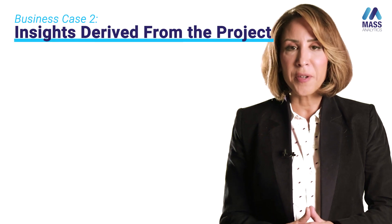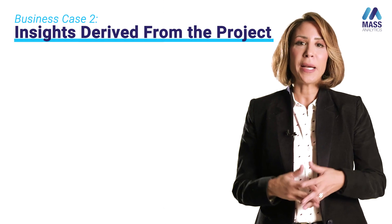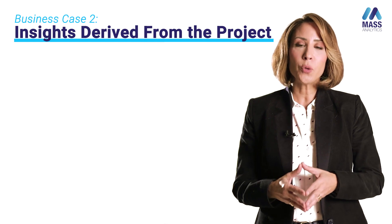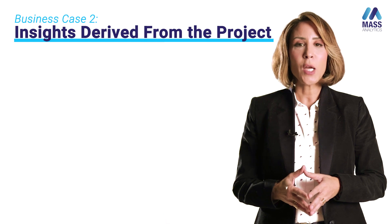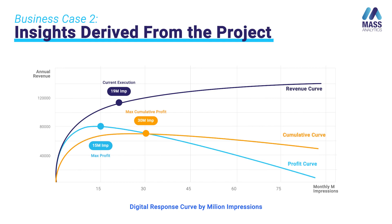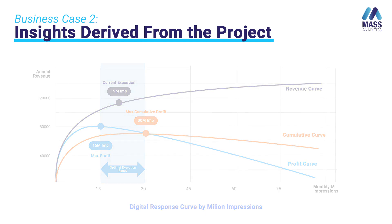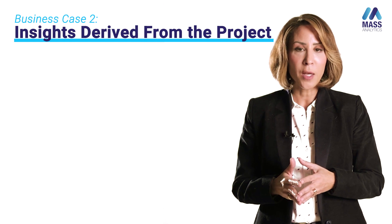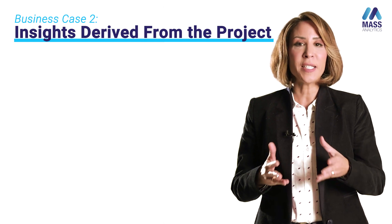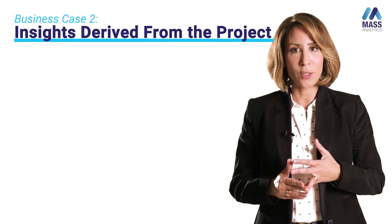One key insight delivered was the optimal execution range by media channel. By deriving the diminishing return curves using S-shaped curves, we determined the maximum marginal ROI and maximum ROI. For example, for one channel shown on screen, the optimal execution range was between 15 million and 30 million impressions, and the client was within that range executing 19 million impressions. We did this for every media channel and also devised a matrix showing ROI and saturation levels, so the client could decide which media channels to invest in based on ROI size and saturation.